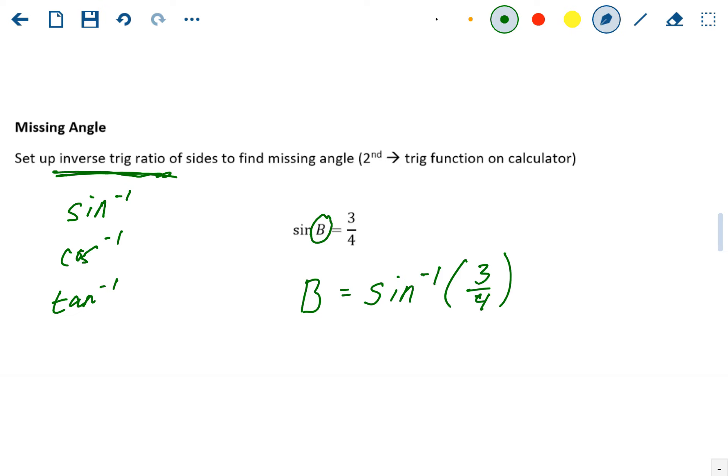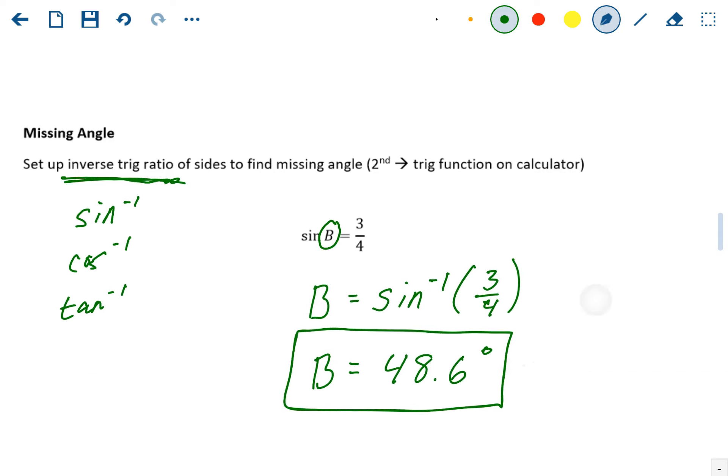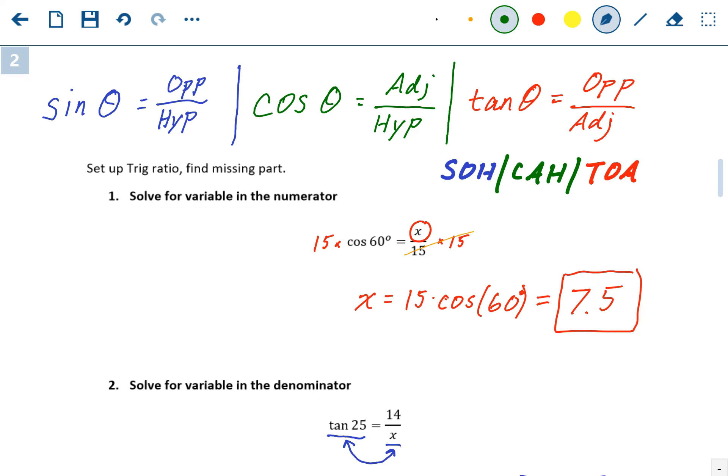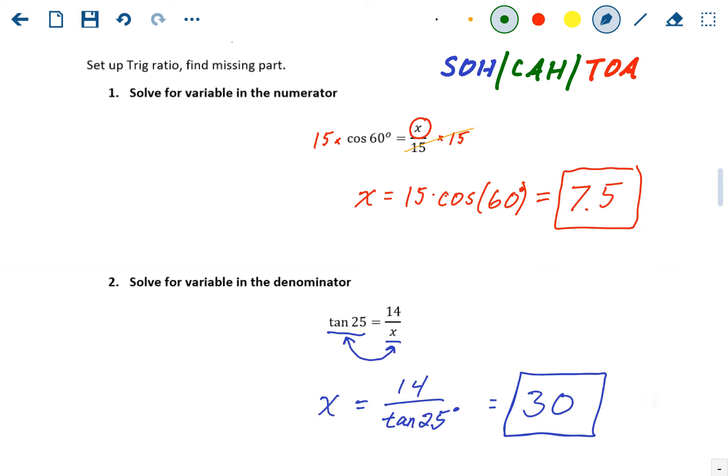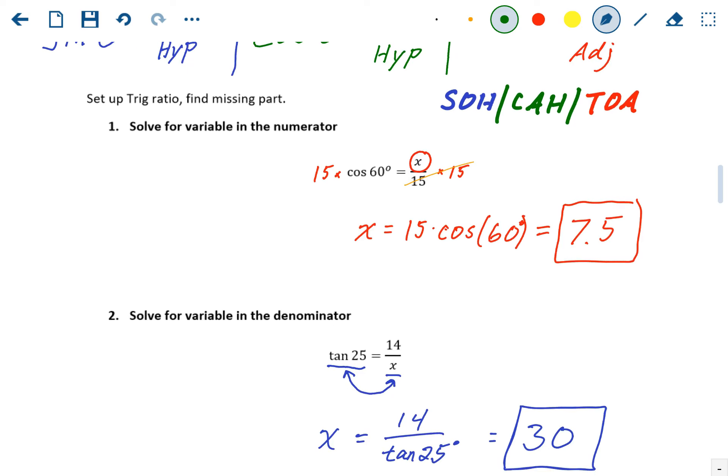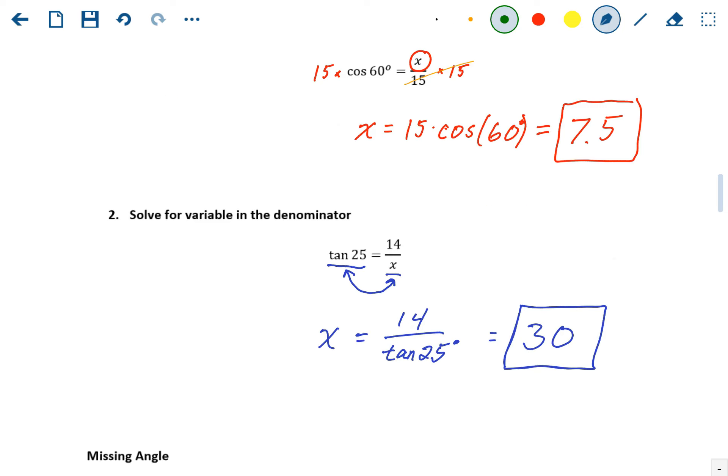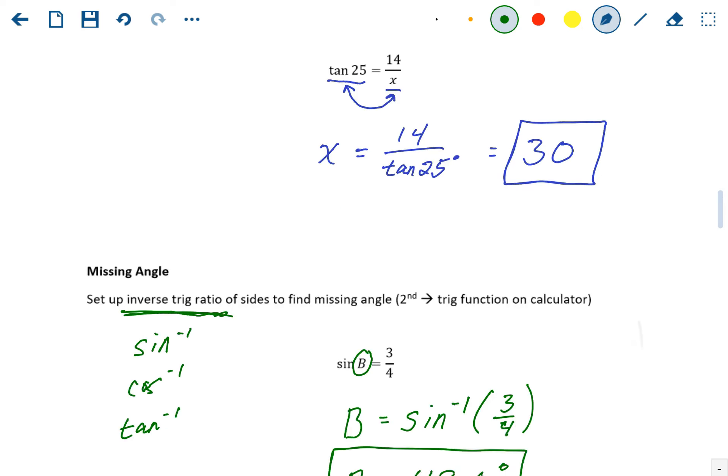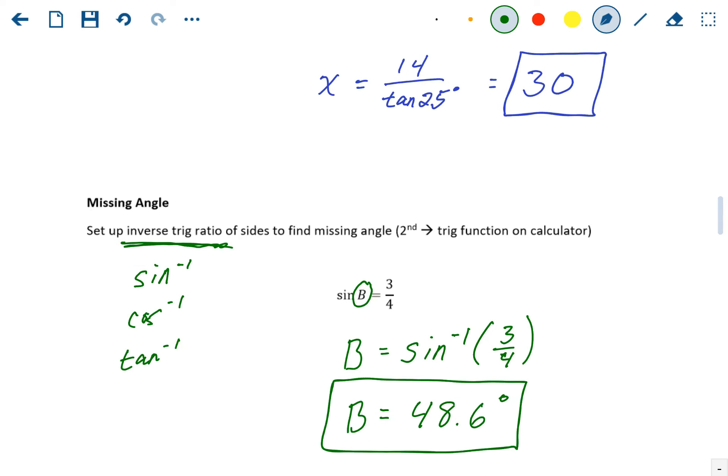And again, that's something you would just type in directly into the calculator. Second sine, three divided by four in the parentheses, hit enter. Now remember, this one is an angle. And you should get an angle of about 48.6 degrees. Those are actually easier than solving as you're just punching into the calculator. So those are the three scenarios we're going to run into. Variable on top, multiply by the denominator. Variable on the denominator, you're going to divide by the trig function. And if you have a missing angle, take the sine inverse of the ratio side.